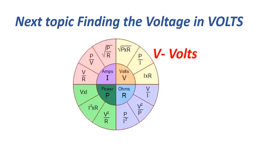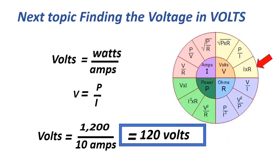The next topic is finding voltage. Volts equals watts over amperes, or V equals P over I, equals 1,200 over 10, equals 120 volts.